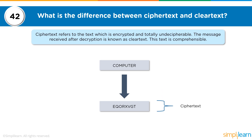The next question: what is the difference between ciphertext and clear text? Ciphertext refers to the text which is encrypted and totally unreadable. The message received after decryption is known as clear text — this text is comprehensible. So the word 'computer' is clear text, meaning it has not been treated with any cryptographic measures. However, if we encrypt it — scramble it into unreadable text using any algorithm — that text is known as ciphertext. Without the key, this becomes unreadable.